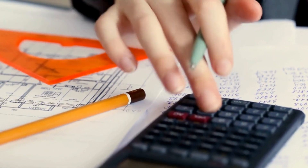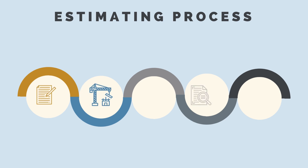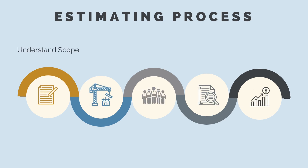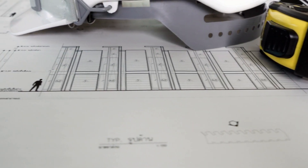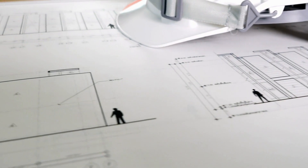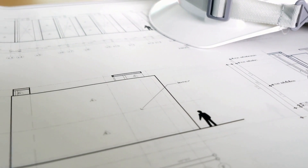Now that we understand the components of a cost estimate, the steps to produce the estimate will make more sense. At a higher level, we first need to understand the project scope by looking at the drawings and specifications. Next, we calculate our direct costs, which represent the majority of work in a cost estimate. Then we calculate our indirect costs — always after direct costs, since direct costs influence them. Finally, we work out our contingency and add on our profit margin. For this course, our main focus is on the direct activity costs.